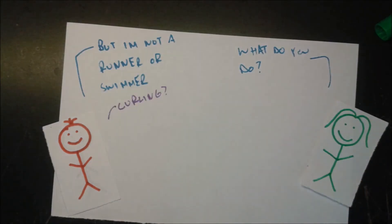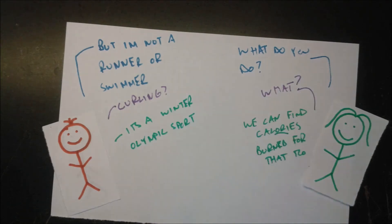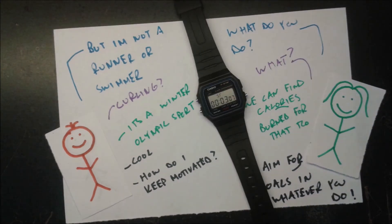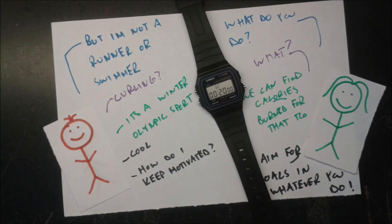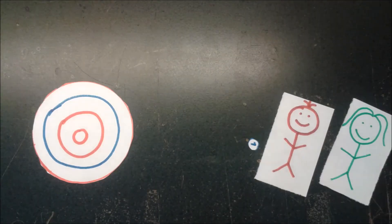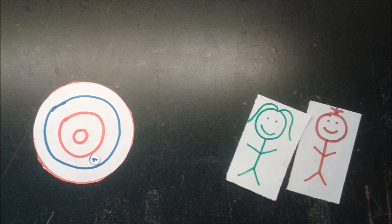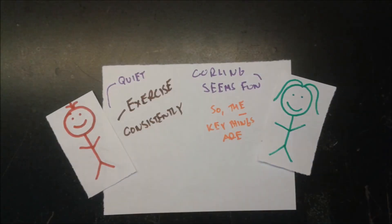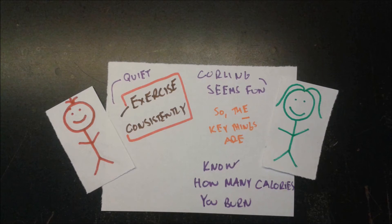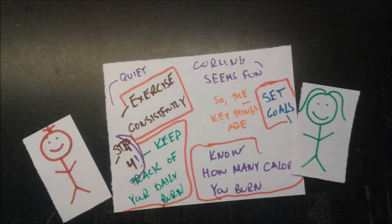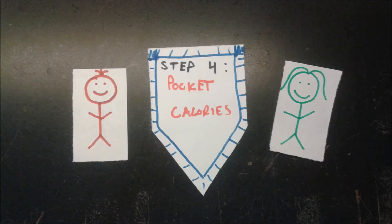A link in the description points to a website listing calories burned for a wide range of exercises. To stay motivated, keep setting goals — if you're a runner, work toward a best time; if you're a swimmer, aim for more laps. Find what makes you love your exercise and keeps you coming back. Key exercise takeaways: exercise consistently, know how many calories you burn, track them, and set goals.